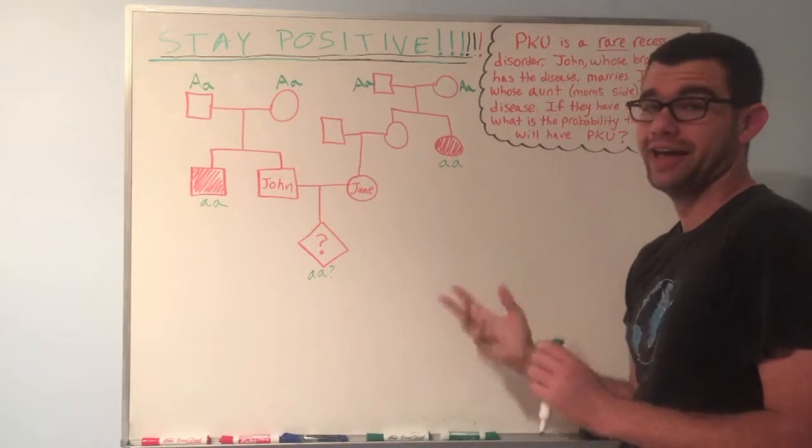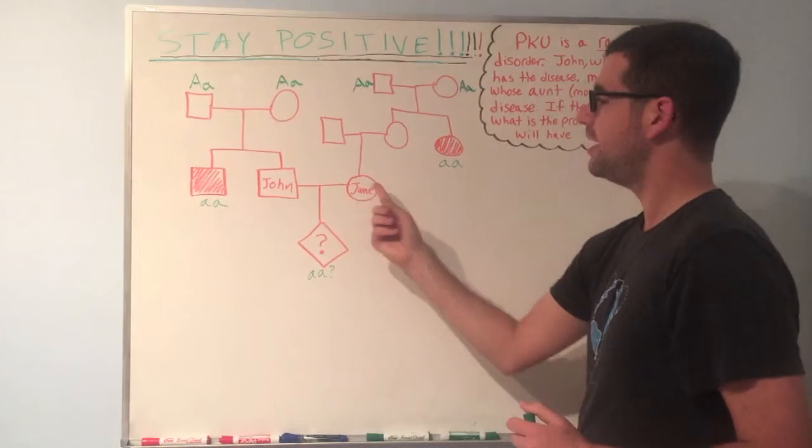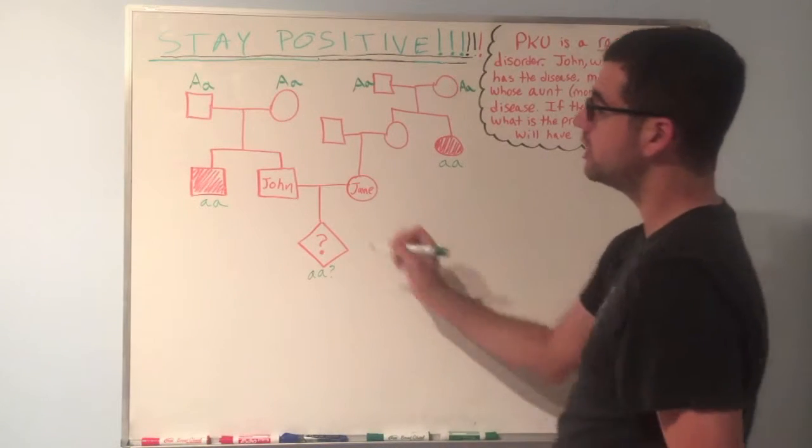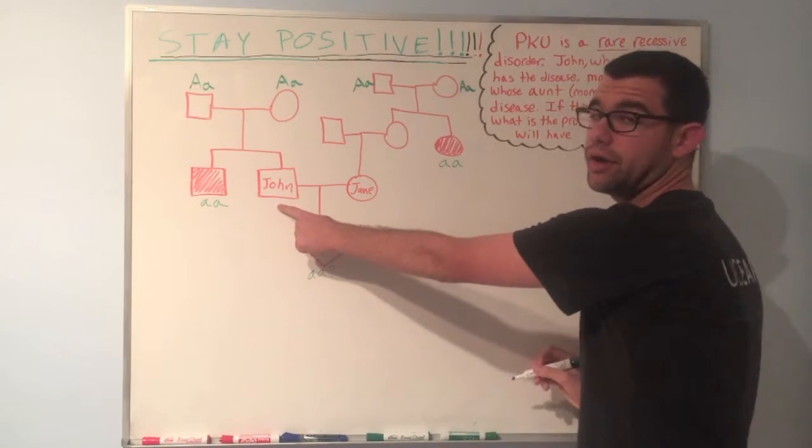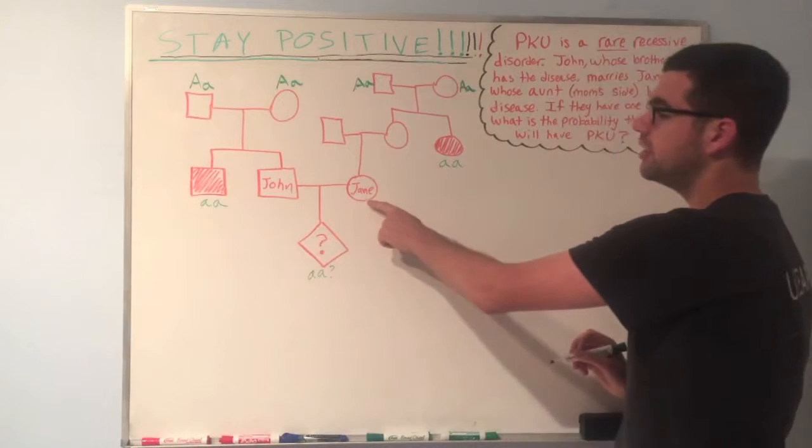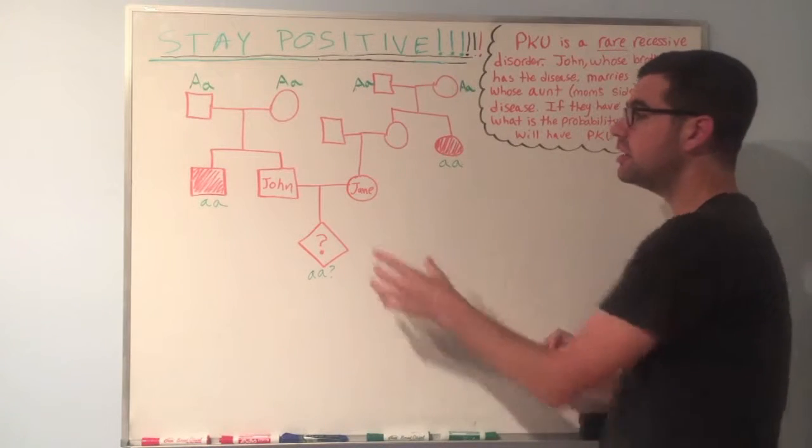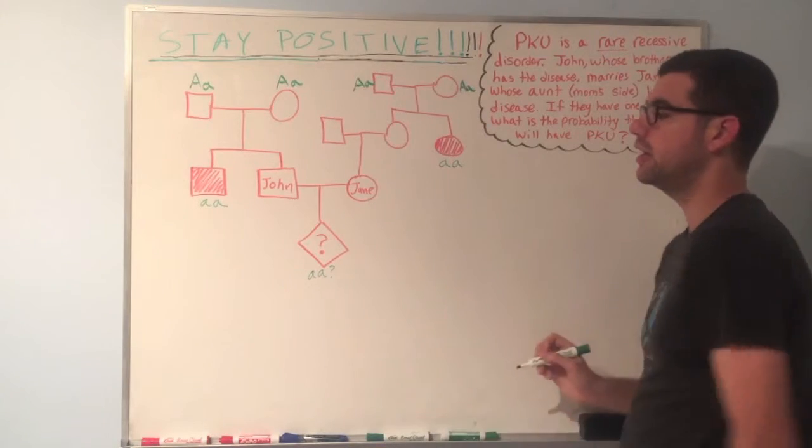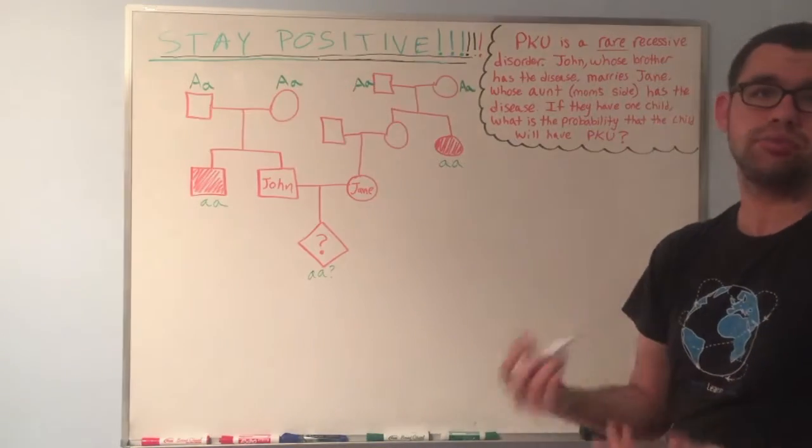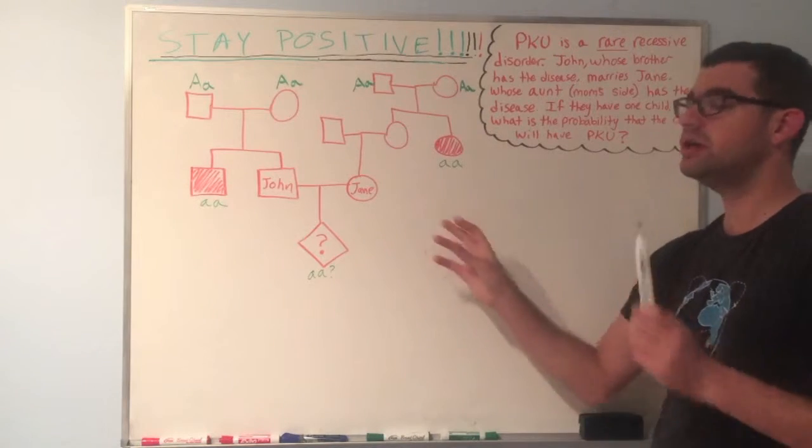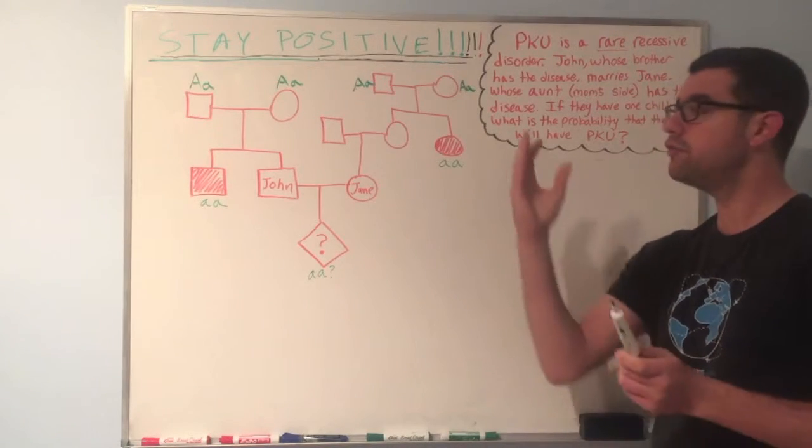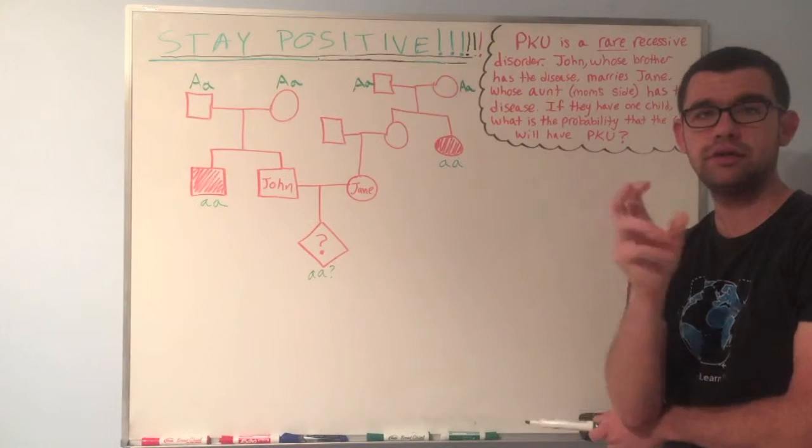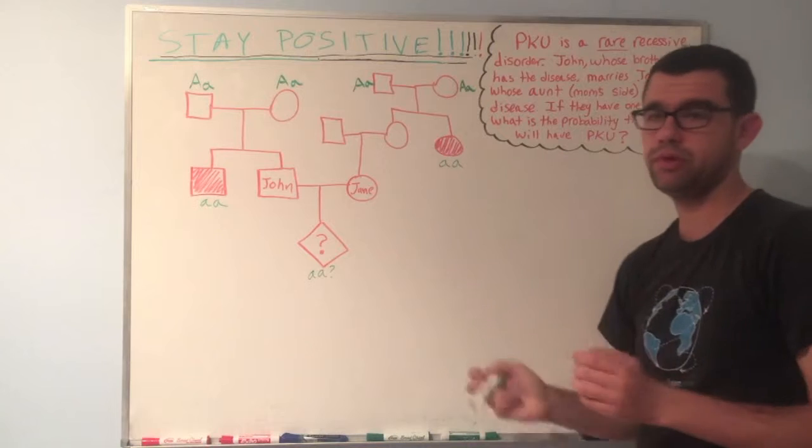Now, we know that again, the rule for two unaffected parents to produce an affected child, they must both be carriers. So we need to find the probability that John will be heterozygous, the probability that Jane will be heterozygous, and then the probability that those two heterozygous will produce a homozygous recessive offspring. So we're going to do that using the product rule of probability, which states that when you have two independent events, the probability of event one and event two happening is just the product of the two probabilities. Let's see what we mean by that.